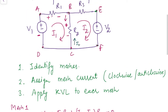Moving to mesh 2, starting from R3: as per the current direction, the positive terminal is marked first. For V2, we know the polarity. For the voltage drop across R2, since I2 flows from the lower to the upper terminal, the lower terminal is positive and the upper is negative. When applying KVL to a mesh, we consider only the voltage drops and rises of that particular mesh — we are not concerned about the polarity assumed in the first mesh.